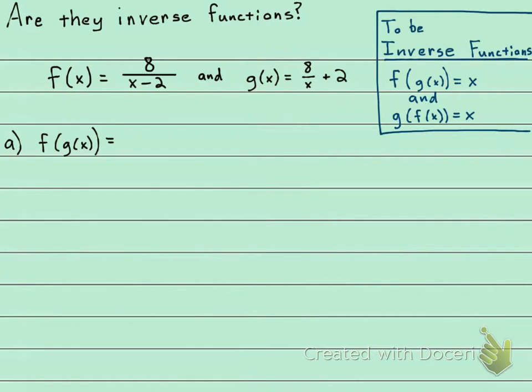So we're going to take our f function, which is 8 over x minus 2, but we're going to plug in for the x. And what goes in the x place? You see the g of x is now in the x place, so the g of x is what goes right there in the x place. So let's plug in the g of x right there. The g of x is 8 over x plus 2.